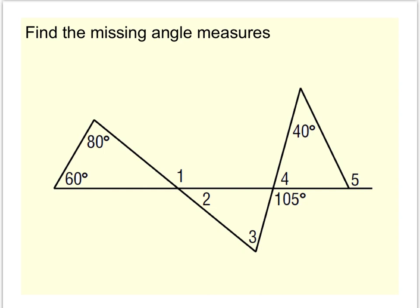First off, let's take a look at angle 1. Angle 1 is an exterior angle to this triangle, this one on the far left. Its remote interior angles are 80 and 60, and so that means angle 1 is the sum of the remote interior angles, or 140 degrees.